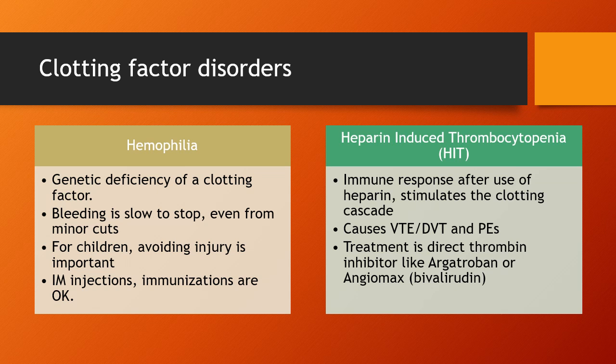Heparin-induced thrombocytopenia (HIT) is an immune-mediated response that occurs after repeated doses of heparin — which is why we've switched to saline flushes. It stimulates the clotting cascade in an idiosyncratic reaction and can cause DVTs and PEs. Treatment is a direct thrombin inhibitor like argatroban or bivalirudin (Angiomax).